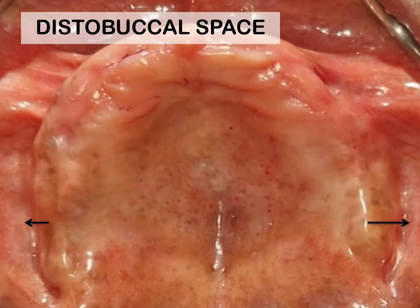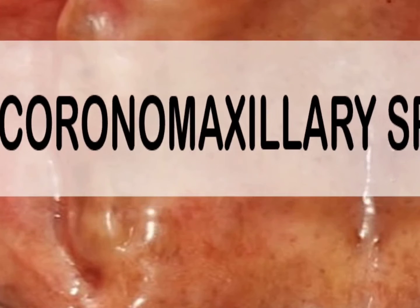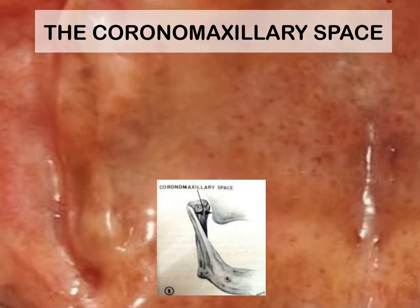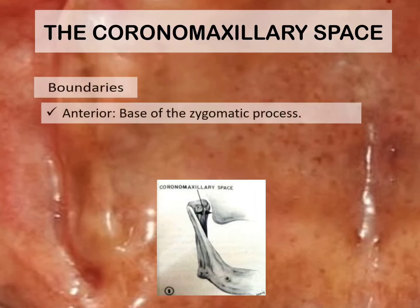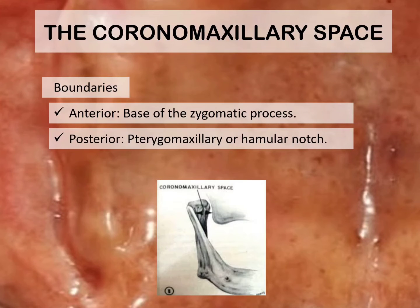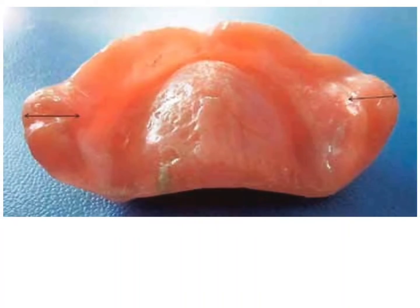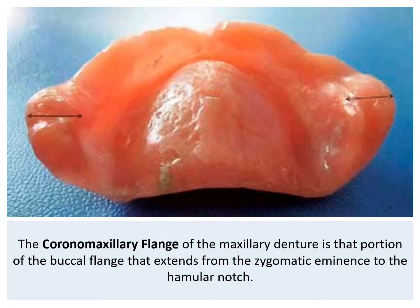The dystobuccal space is also known as the buccal space or vestibule, the buccal pocket, tuberosity sulcus, dystobuccal angle of the buccal vestibule, buccal sulcus, buccal pouch, buccal mucous membrane reflection area, and the post-molar space. The coronomaxillary space is the anatomic region that lies medial to the coronoid process and lateral to the maxillary tuberosity. It is bounded anteriorly by the base of the zygomatic process, posteriorly by the pterygo-maxillary or hamular notch, and inferiorly by the crest of the residual ridge. The coronomaxillary flange of the denture is that portion of the buccal flange extending from the zygomatic eminence to the hamular notch.